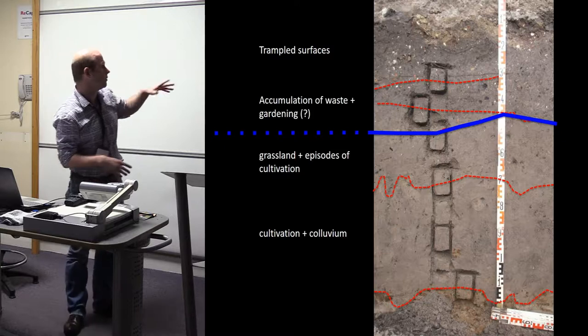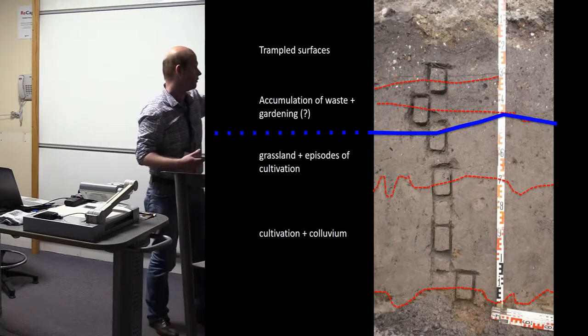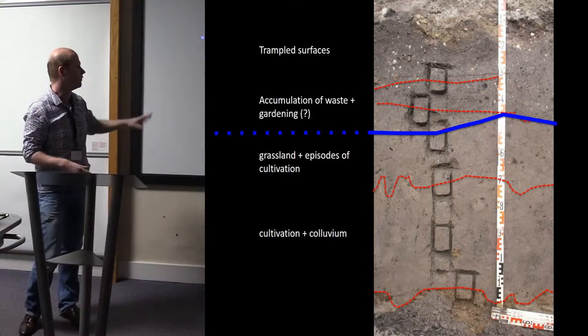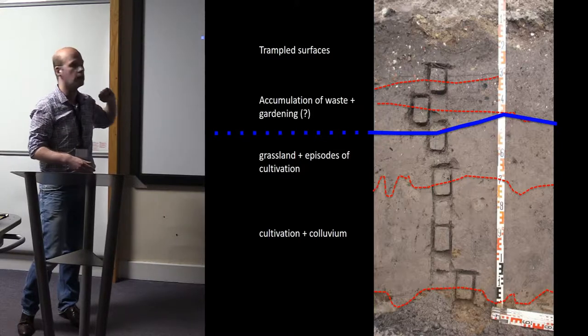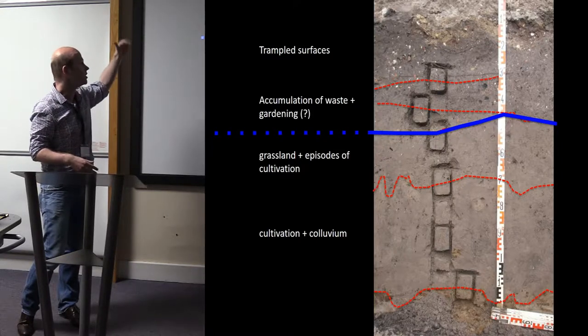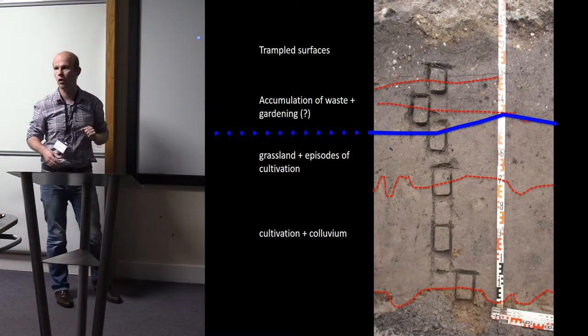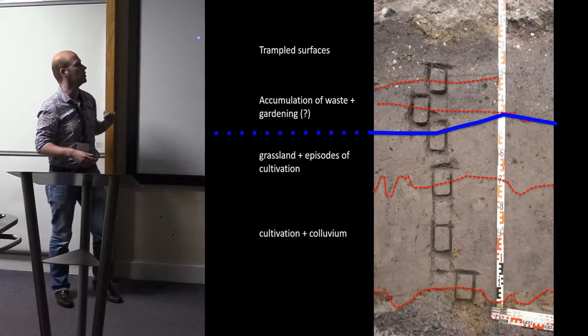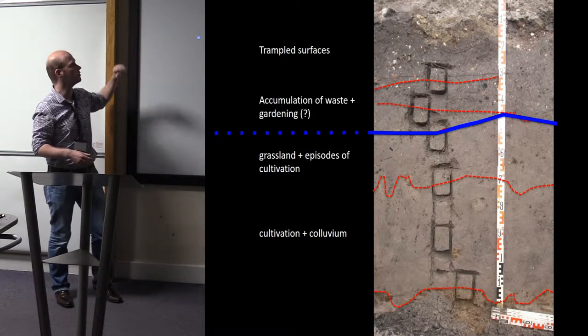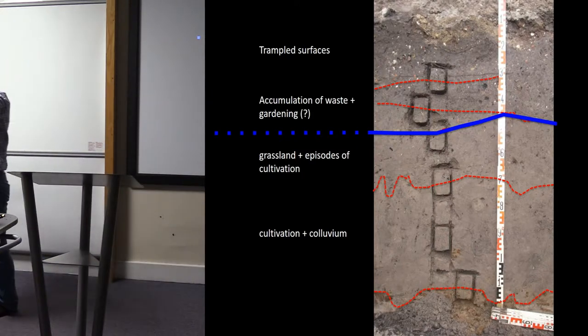Now if we summarize this sequence, we go for cultivation and colluvium in the first phase. Then we have some grassland with episodes of cultivation. Then we have the break where we probably enter in a more urbanized phase, where we have the accumulation of waste, different kinds of waste and gardening. And in the uppermost part, some kind of surfaces that have been trampled.